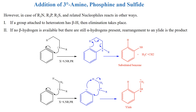The second case is where there is no beta hydrogen. Here the alpha hydrogen will be shifted to the benzene ring and a ylide will be produced.